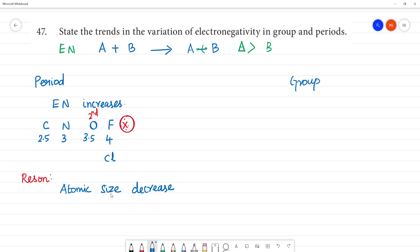Atomic size decreases means that the distance between the nucleus and the outermost electron decreases. So what happens? Incoming electron, the tendency to pull the electron increases. Tendency to pull electrons is more.